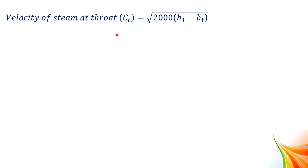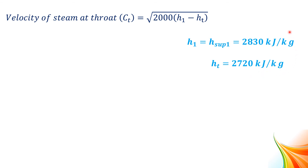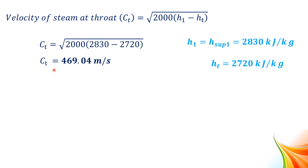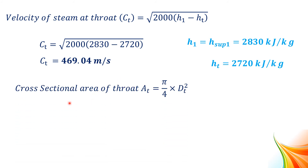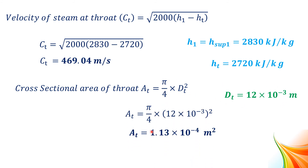The velocity of steam at throat is CT = √(2000 × (H1 − HT)) = √(2000 × (2830 − 2720)), giving CT = 469.04 m/s. The cross-sectional area at throat is AT = π/4 × DT² = π/4 × (12 × 10⁻³)², giving AT = 1.13 × 10⁻⁴ m².